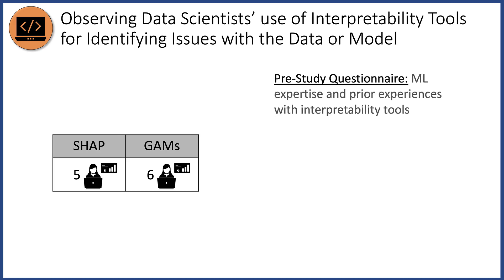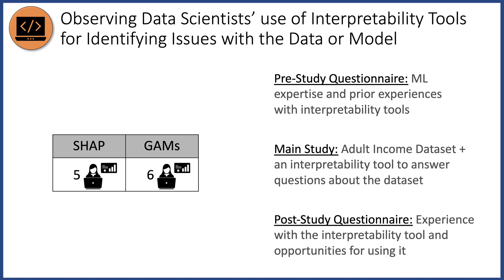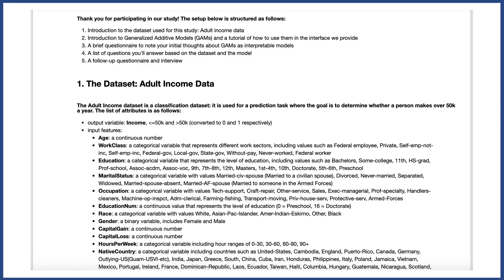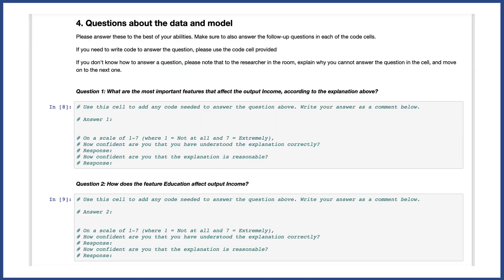The contextual inquiry included a pre-study questionnaire where we asked people about their background in machine learning and prior experiences with interpretability tools. This was followed by the main study where we asked people to answer questions about a dataset and model with the help of an interpretability tool. Finally, we ended the study with questions about people's experience with the interpretability tool and if they could see these tools being used in their day-to-day work. We used Jupyter notebooks to simulate a realistic context for data scientists — participants were first introduced to the dataset, followed by the model, then the interpretability tool, and finally asked to answer questions about the data and the model.